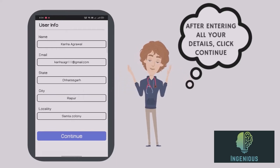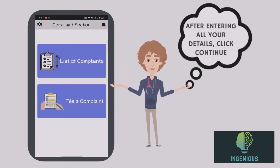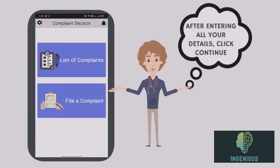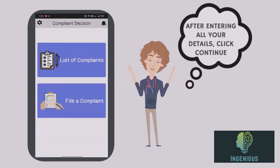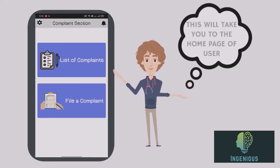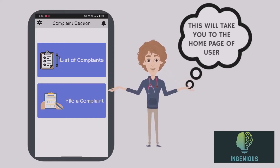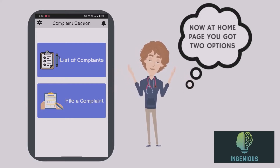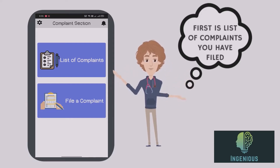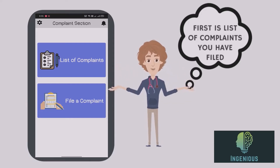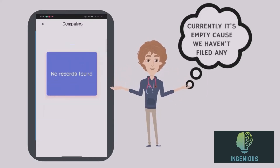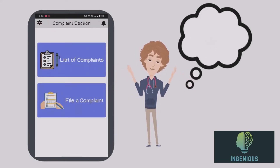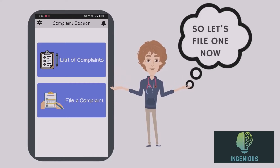After entering all your details, click continue. This will take you to the home page of the user. On the home page you have two options: first is the list of complaints you have filed — currently it's empty since we haven't filed any — so let's file one now.